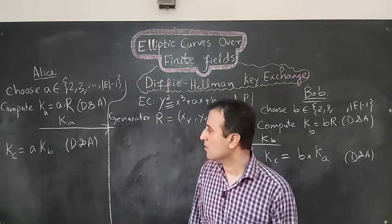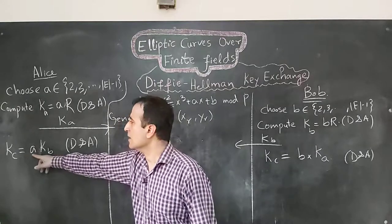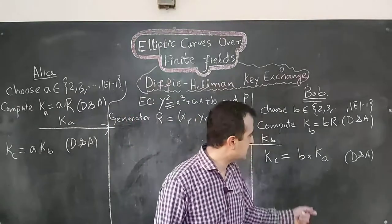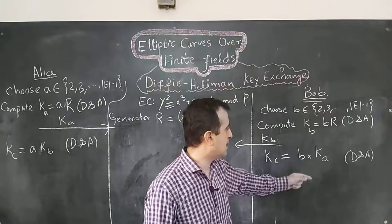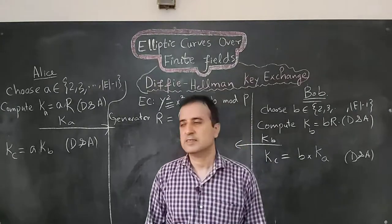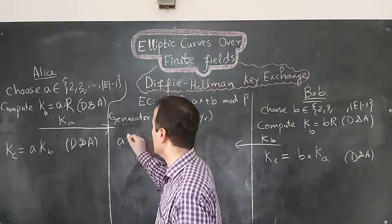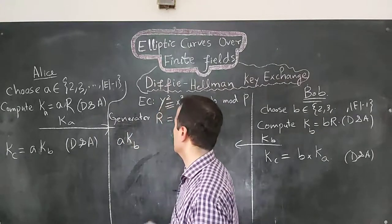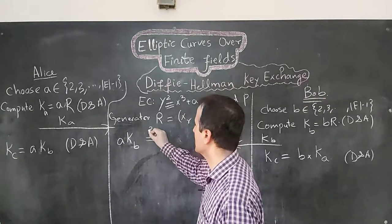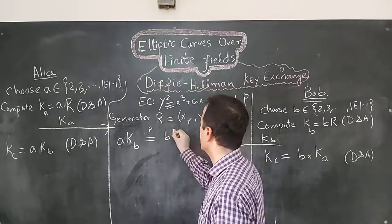Our second question: how come KC computed using A times KB is the same as KC computed with B times KA? Let's see. We have A times KB — is it the same as B times KA?